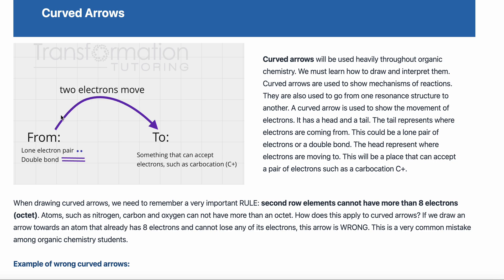What is a curved arrow? A curved arrow represents the movement of two electrons. This curved arrow with a double head represents the movement of two electrons and it has a tail and a head. The tail represents where electrons are coming from, so our curved arrow always needs to come from something that has electrons — either a lone pair of electrons or a double bond.